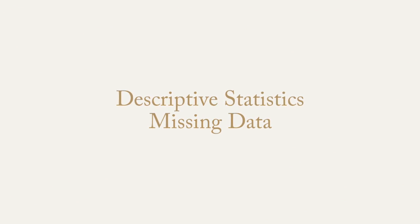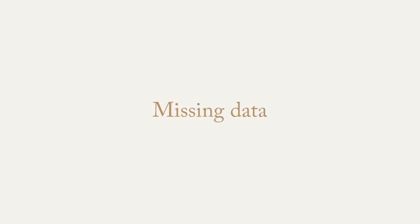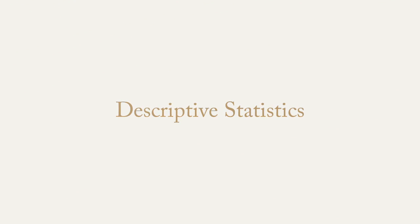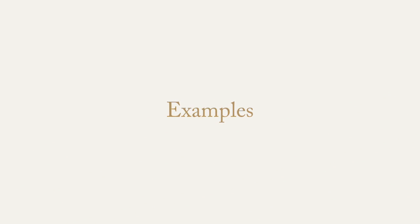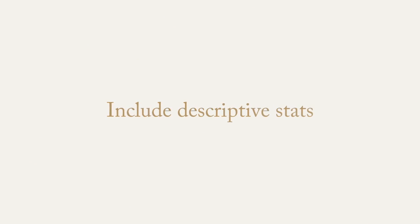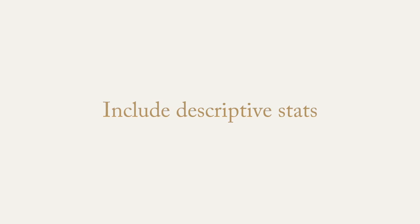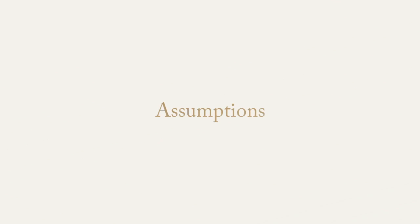The second section involves information about descriptive statistics and any information on missing data. For example, if one of your cases or participants didn't answer a question, they don't have complete data and SPSS might remove them from the analysis. In social research, descriptive statistics involve information on how respondents answered questions — for example, how many identified with a particular gender, what's their average age, or how did most participants score on one of your measures. In most write-ups, you want to include some descriptive statistics so that the reader can have a better understanding of the participants in the sample.